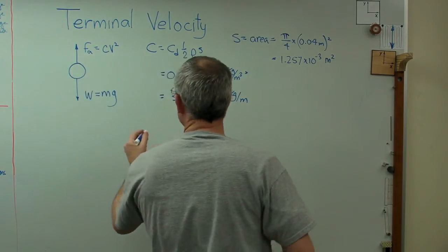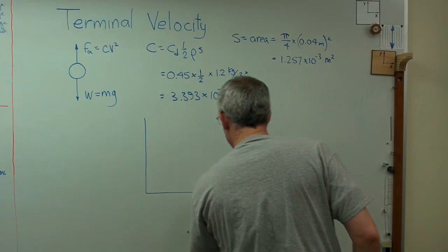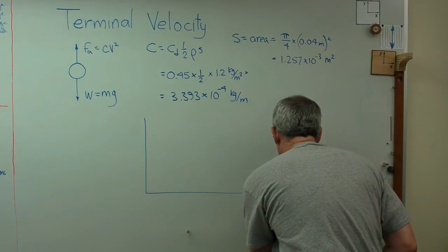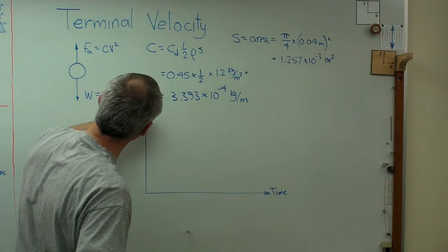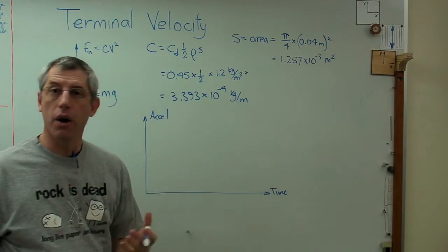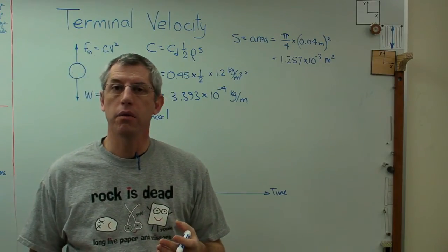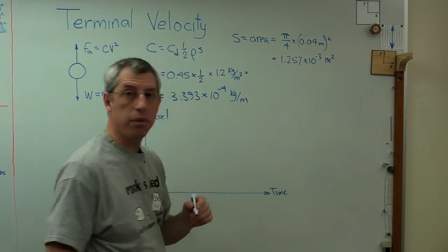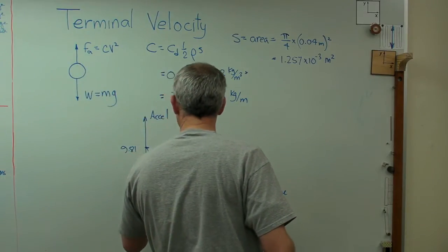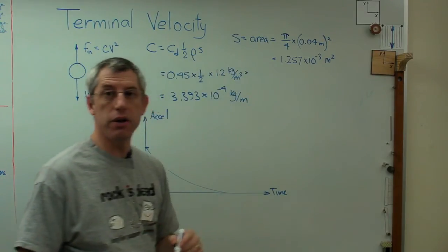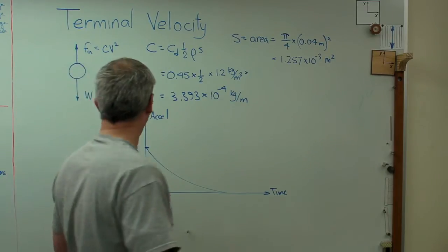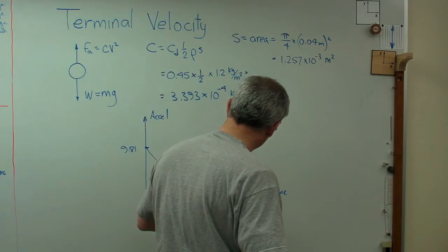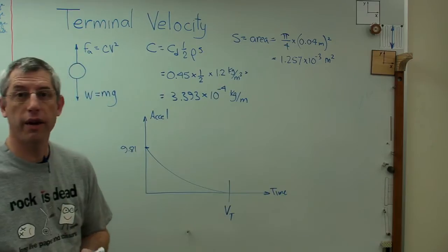So let's talk about, just in words here, let's talk about what's going to happen. Let's call this time on this axis. And the vertical axis will make that acceleration. Now, when the ball is first released, the acceleration is going to be 9.81 meters per second squared. What's going to happen is it's eventually going to go down until the acceleration is zero. When I get to zero acceleration, that's terminal velocity. I'll call that vt.